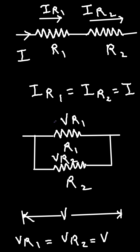To summarize: in a series circuit, the current through each element will be the same. And in a parallel circuit, the voltage across each element will be the same.